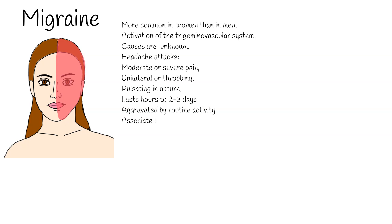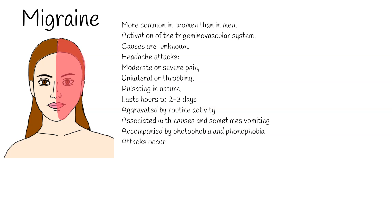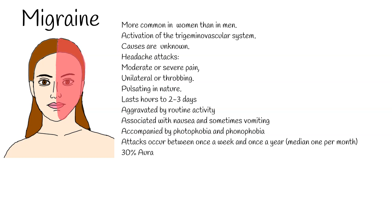Migraine is characterized by headache attacks frequently described as moderate or severe pain, which may be unilateral or throbbing — meaning only one side of the head, pulsating in nature. Attacks last hours to 2–3 days, are aggravated by routine activity, associated with nausea and sometimes vomiting, and accompanied by photophobia and phonophobia. Attacks occur between once a week and once a year, with a median of 1 per month. A third of people with migraine sometimes or always have aura — visual disturbances typically lasting 10–60 minutes — before the headache.